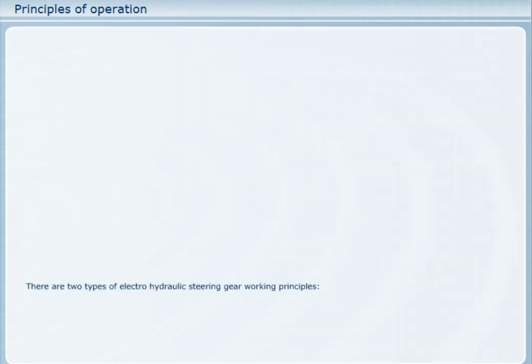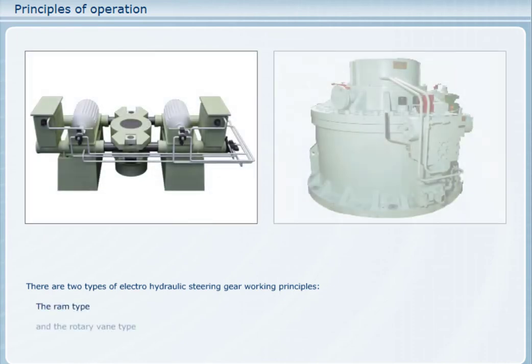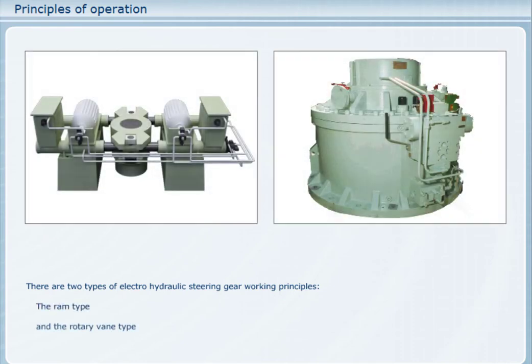There are two types of electro-hydraulic steering gear working principles: the ram type and the rotary vane type.